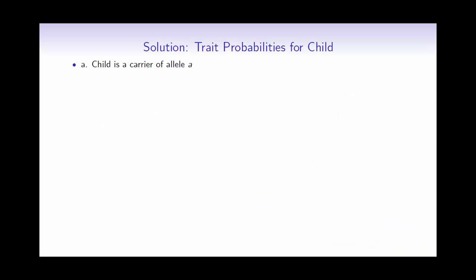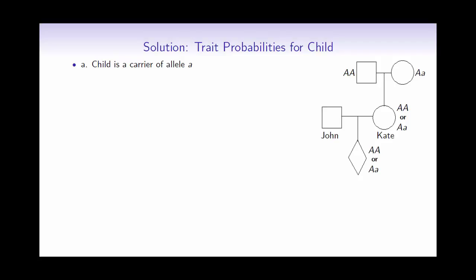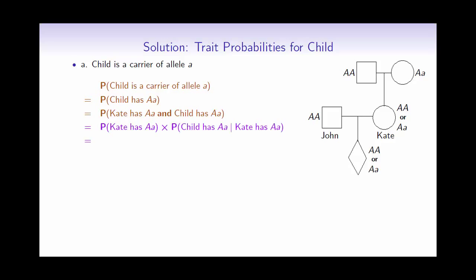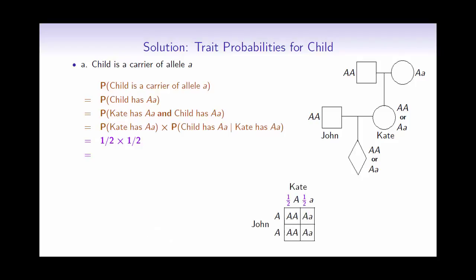The first part asks us to find the probability that the child is a carrier of cystic fibrosis. Remember that John is not a carrier of cystic fibrosis, so we need the probability of the child being heterozygous. Both the child and Kate must be heterozygous, so we use the chain rule since these are not independent events. From the Punnett square for Kate, she has a probability of one-half of being heterozygous. Given Kate is heterozygous, the probability of the child being heterozygous is also one-half. Multiplying these together gives one-quarter.